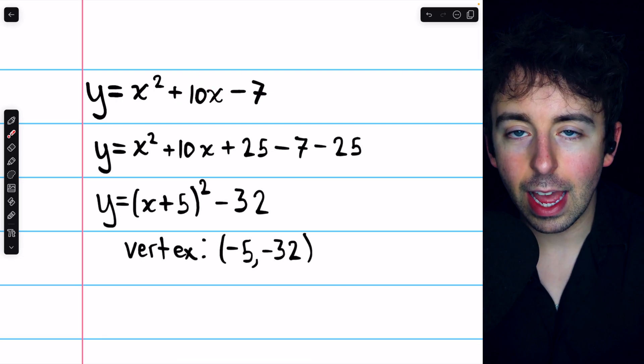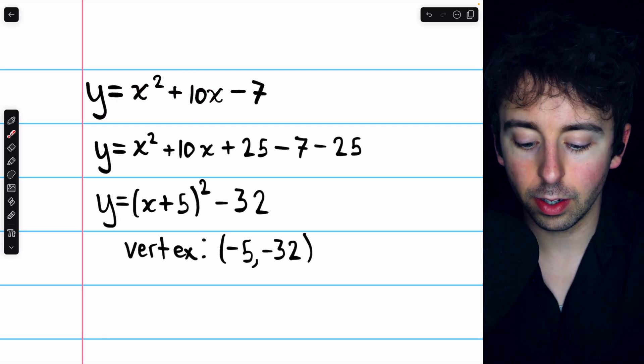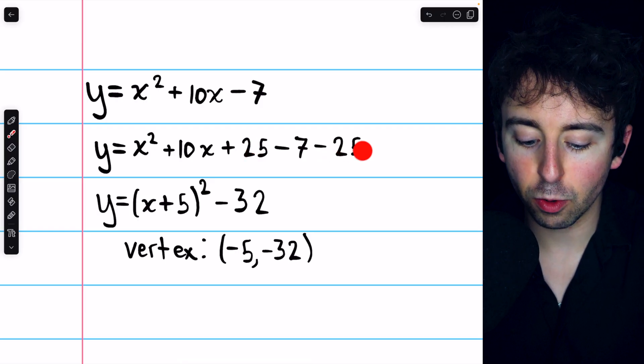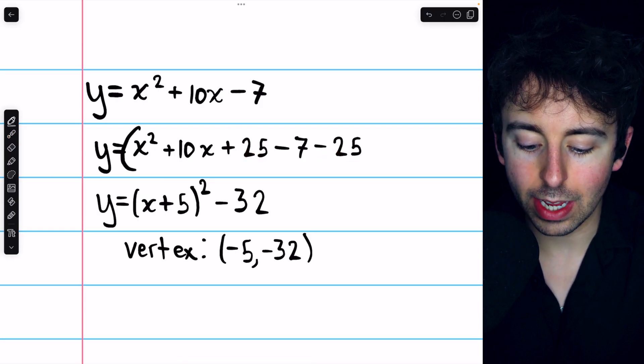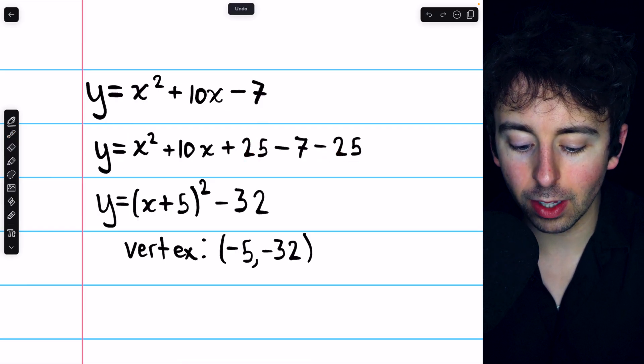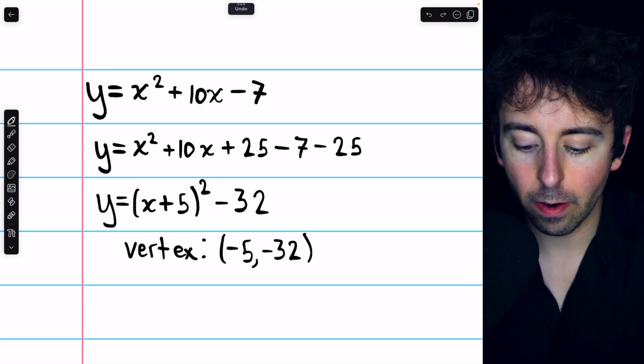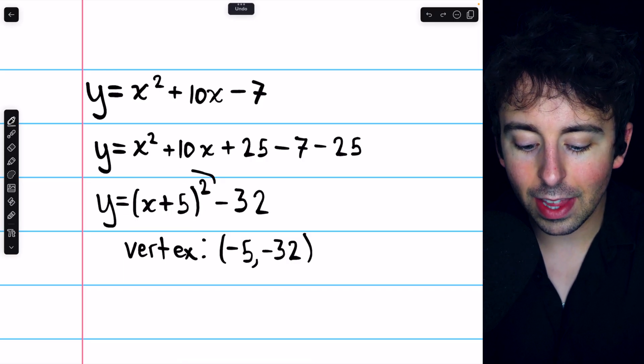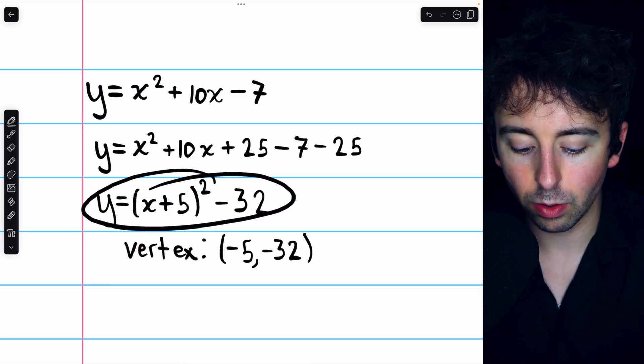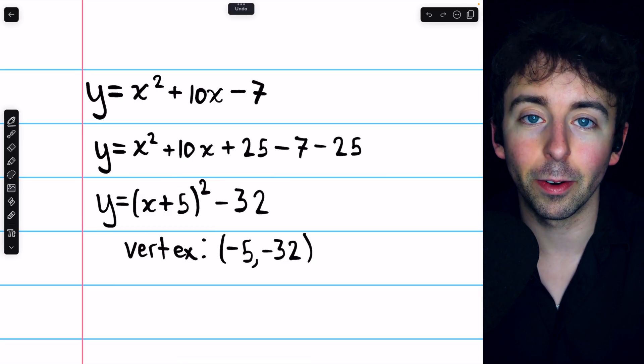In this case, b is 10, so b over 2 squared is 5 squared, so we add 25 and subtract 25. Then we can write that perfect square trinomial as x plus 5 squared. Then we still have minus 32 outside, and that is the vertex form equation, which tells us the vertex very nicely.